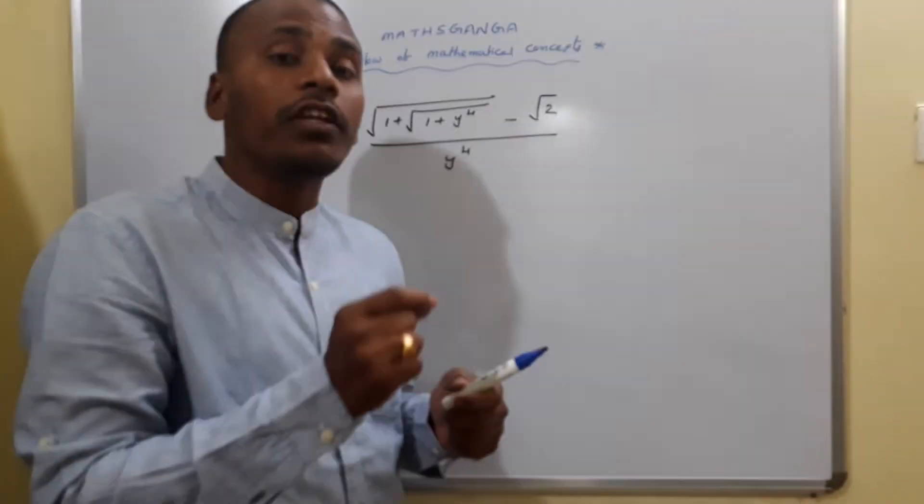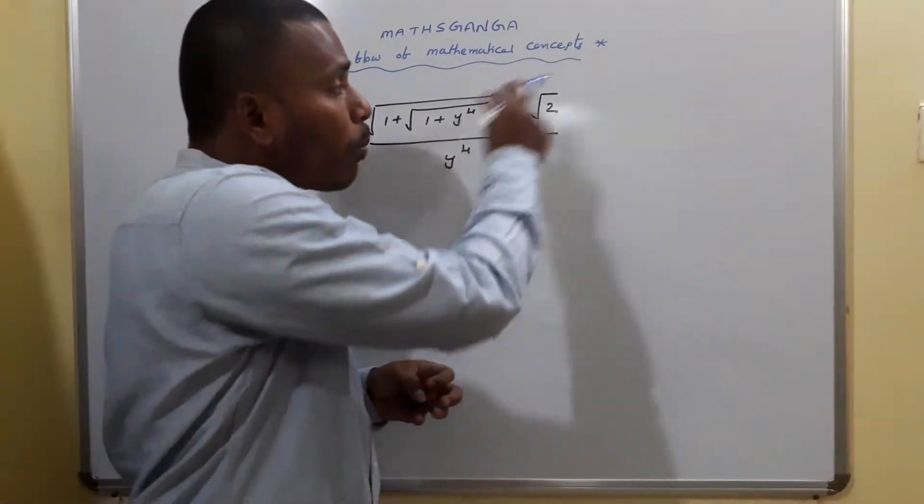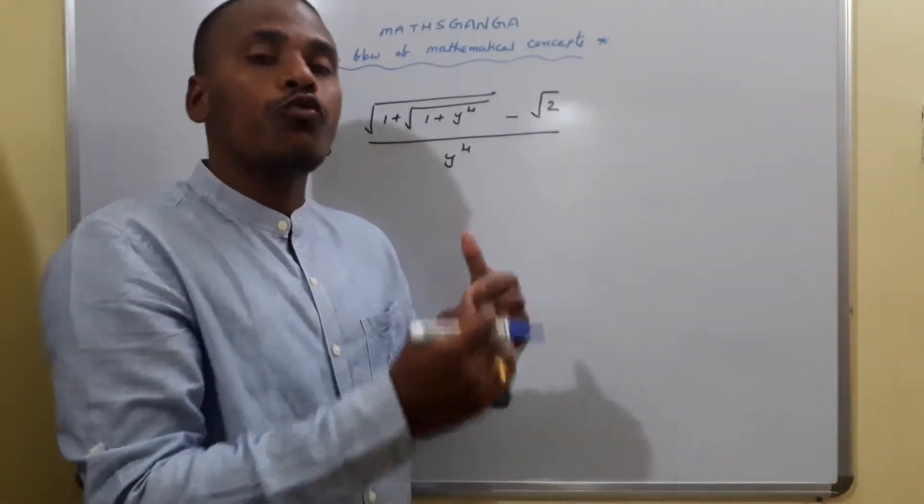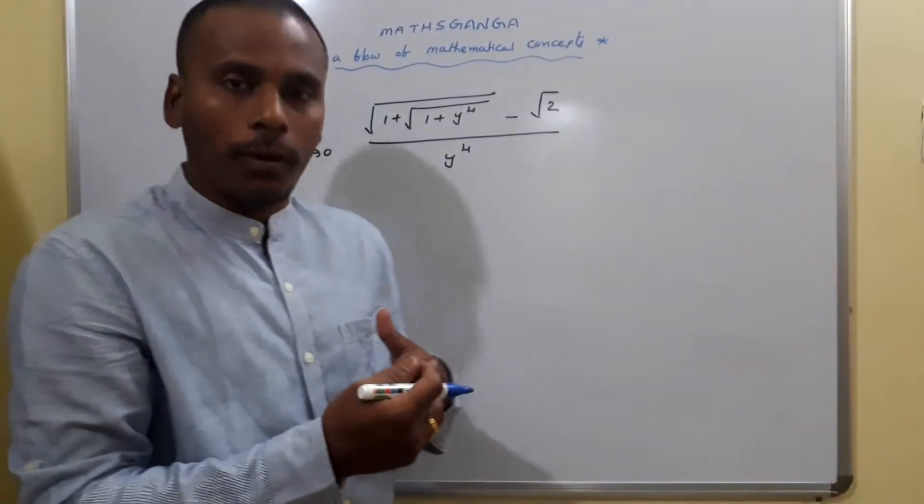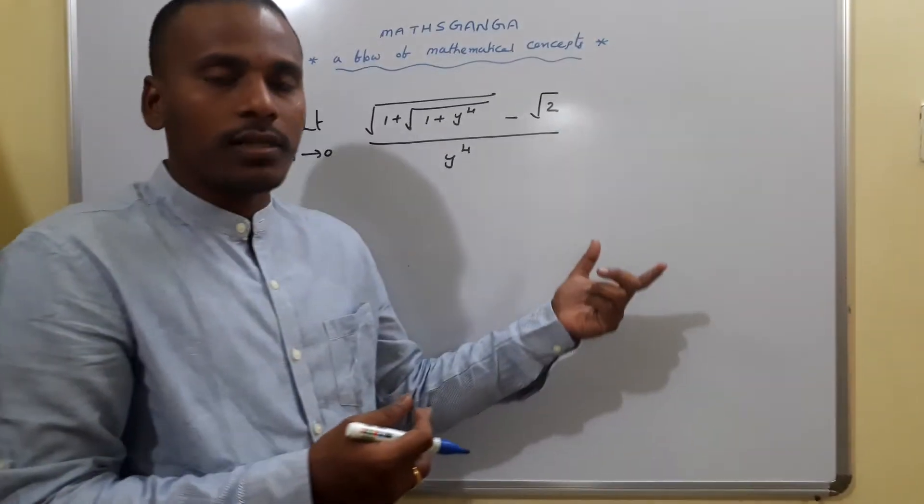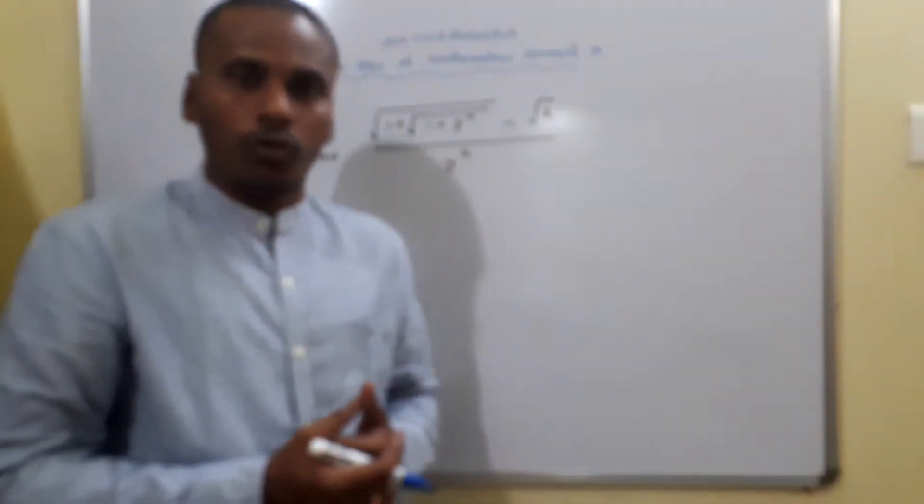Since 0 by 0 is an indeterminate form, then we are ready to use L'Hospital's rule for this problem. To use L'Hospital's rule initially we need to check whether the problem leads to either 0 by 0 format or infinity by infinity format.